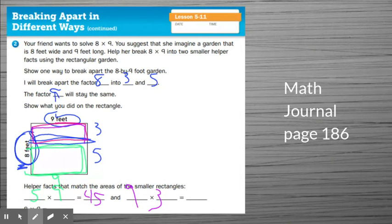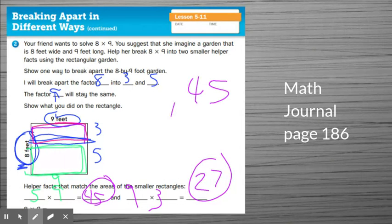And then 9 times 3. The reason I did this was because I can count by 3's. 3, 6, 9, 12, 15, 18, 21, 24, 27. I'm going to stop at 27. Now that I have this, I can add my two products. 45 plus 27. 5 plus 7 is 12. I'm going to carry that 1. And it is 7. 8 times 9 is 72.